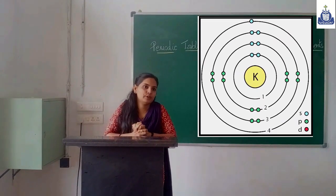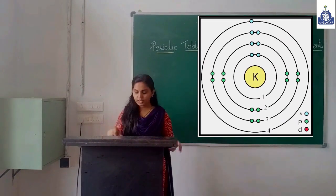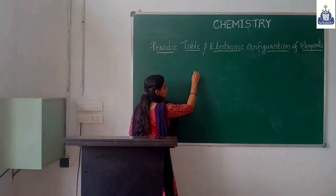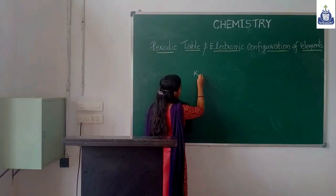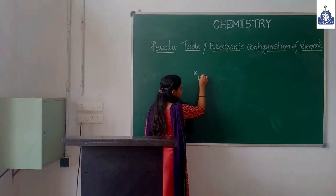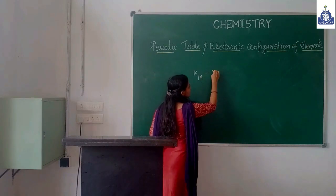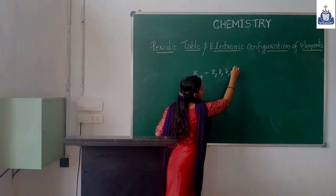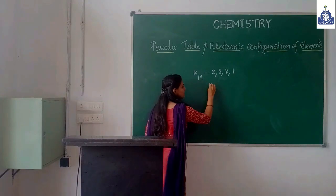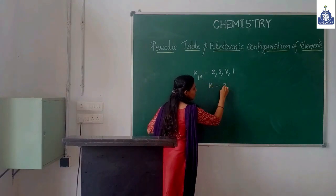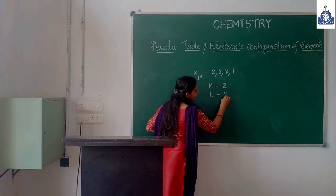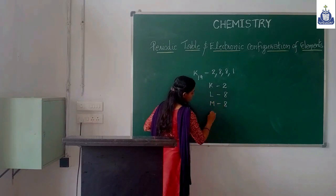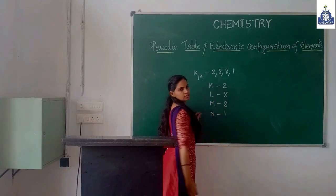This is the Bohr model of potassium. Potassium's symbol is K. Its atomic number is 19, and its electronic configuration is 2, 8, 8, 1. In the K shell there are 2 electrons, in the L shell 8 electrons, in the M shell 8 electrons, and in the N shell 1 electron.